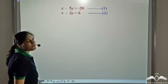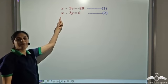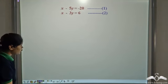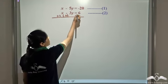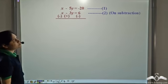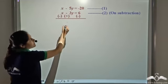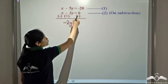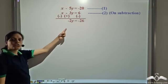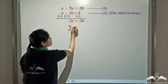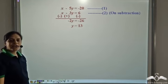In equation one the coefficient of x is one, and in equation two the coefficient of x is one. So we can eliminate x by subtracting these two equations. x minus x gives us zero. Negative five y plus three y gives negative two y. Equal to negative twenty minus six, which is negative twenty-six. So y is equal to negative twenty-six divided by negative two, which is thirteen.